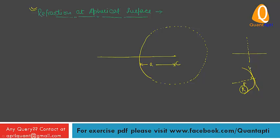For a spherical surface, the normal passes through the center of curvature. If we consider a point object O, a ray of light from point object O incident at any point on the spherical surface makes an angle I, which is the angle of incidence.